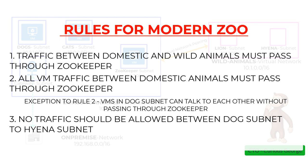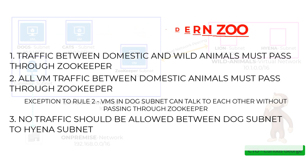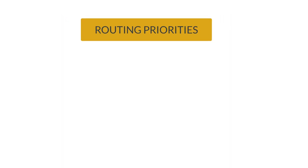So how do we accomplish this? So far we have talked about system routes or routes that were created automatically. In order to accomplish these rules, let's take a look at user defined routes. But before that, let's look at how routing priorities work inside of Azure.